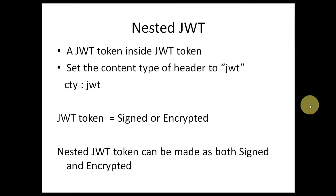What is nested JWT? A nested JWT is simply a JWT token inside a JWT token. One important thing is that we have to set the content type of the header to JWT — that is, 'cty: JWT' must be set in the header. This provides metadata indicating there is a token inside a token. Using the nested JWT feature, we can make the token both signed and encrypted.